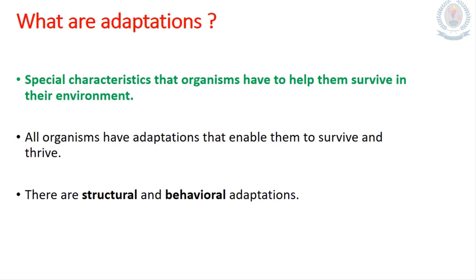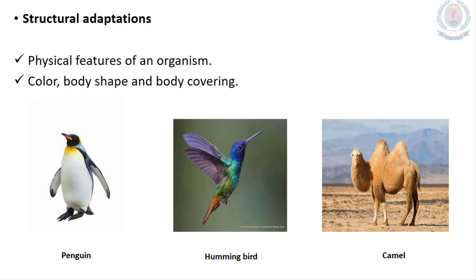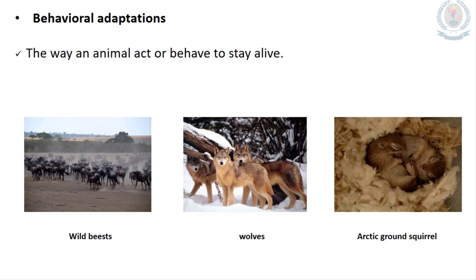Structural adaptations refer to the physical features of an organism such as color, body shape and body covering. Look at the penguin in this picture — the penguin has thick feathers to prevent from too much cold. The hummingbird has a thin and long beak that helps to get nectar from flowers easily. The camel has thick fur coat, also to prevent from cold.